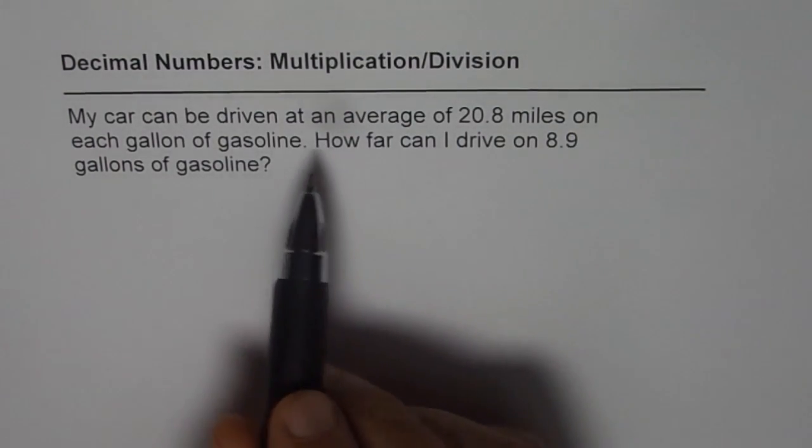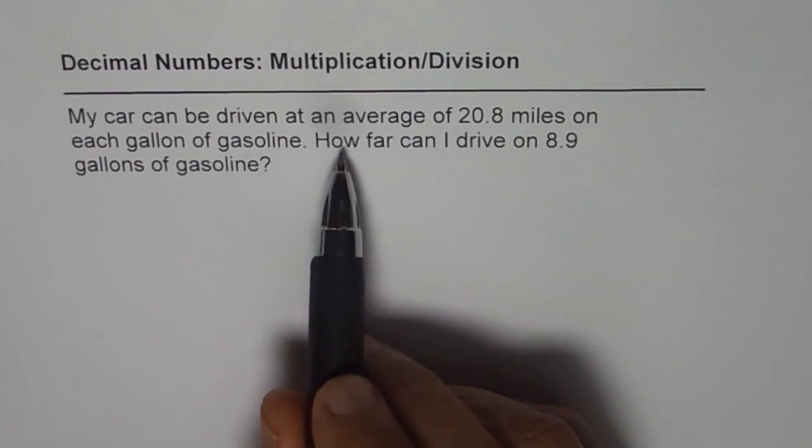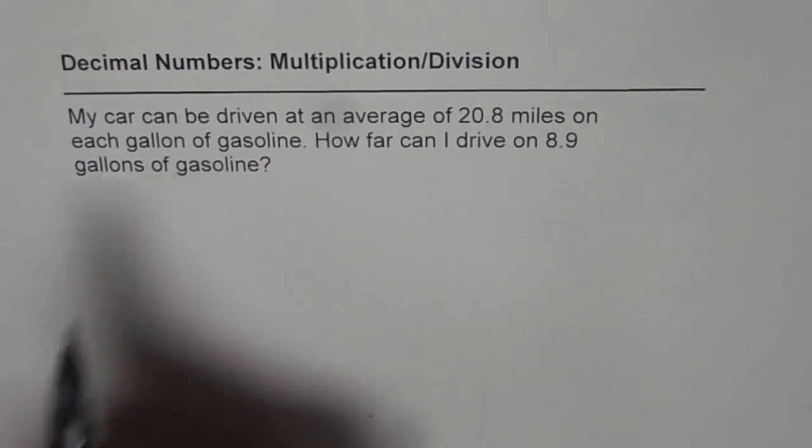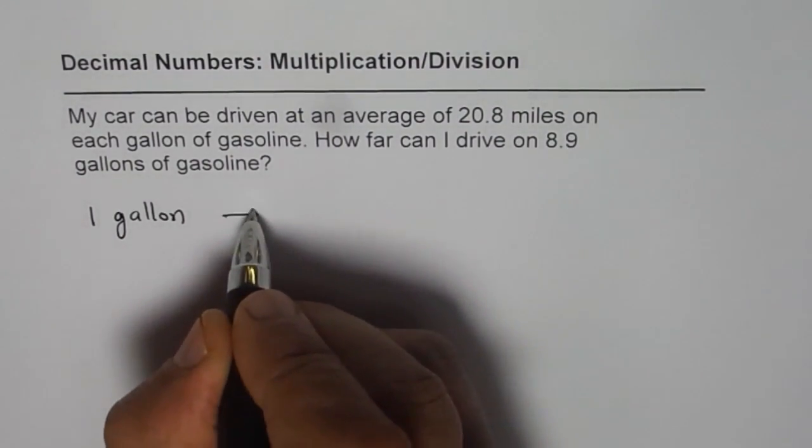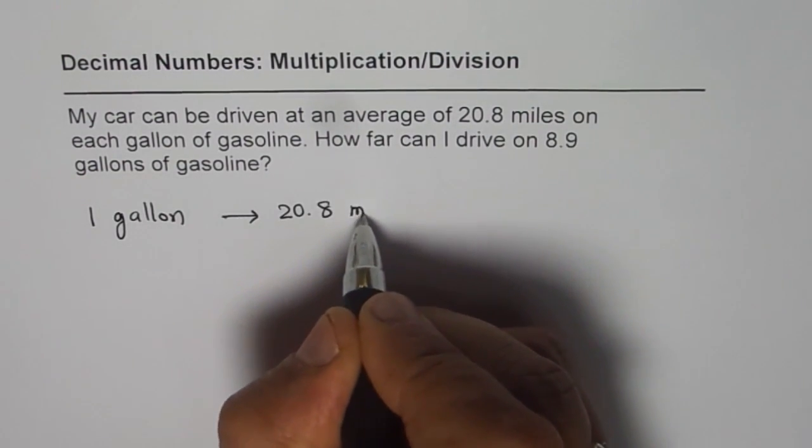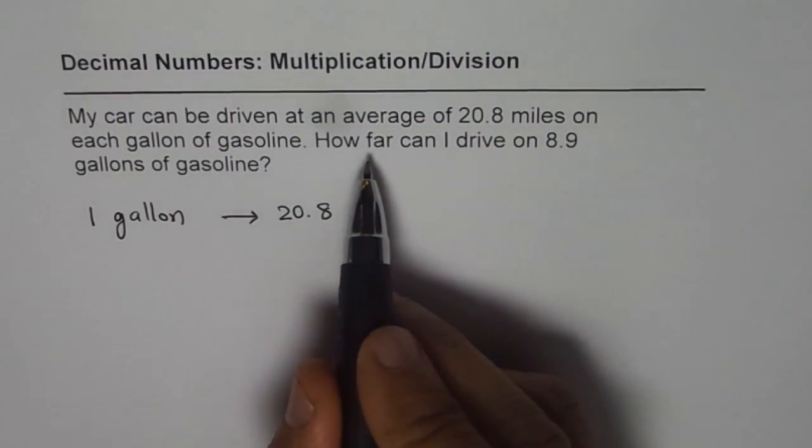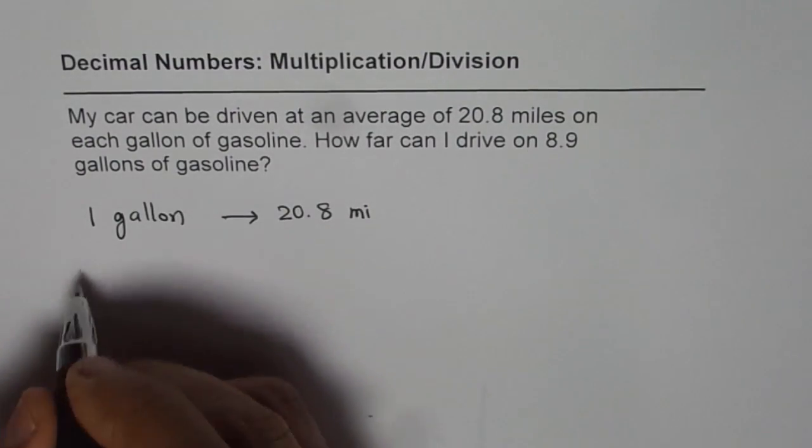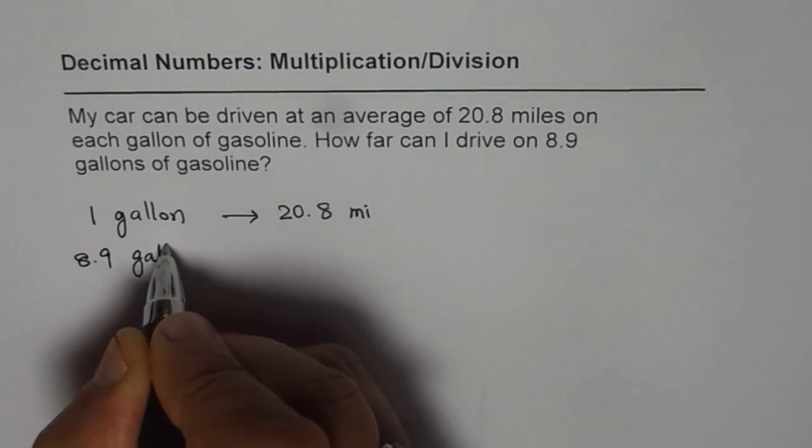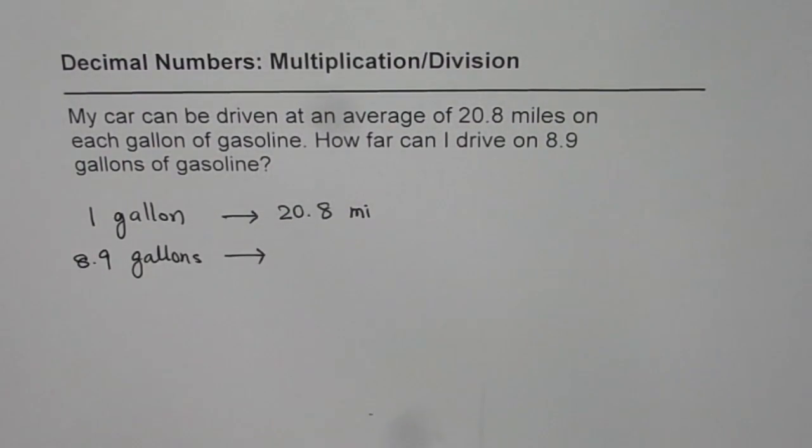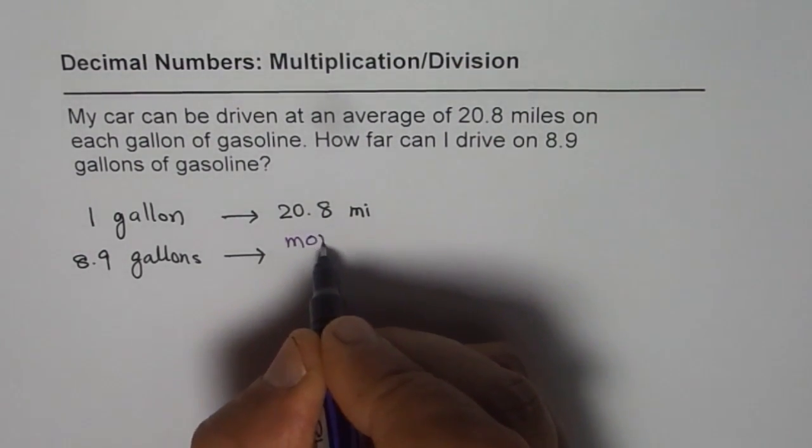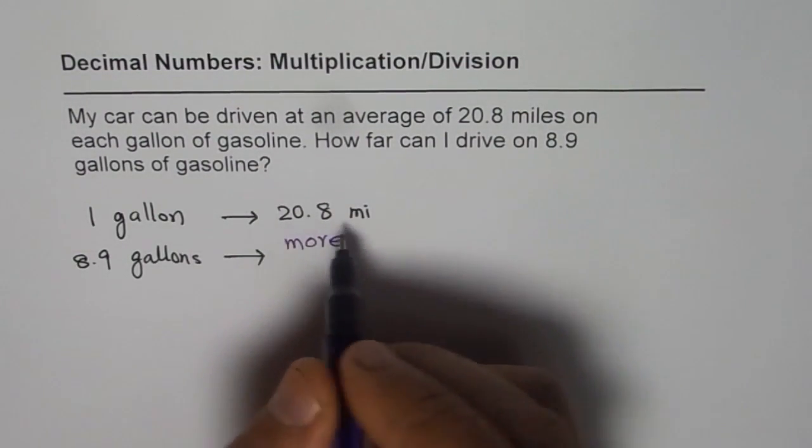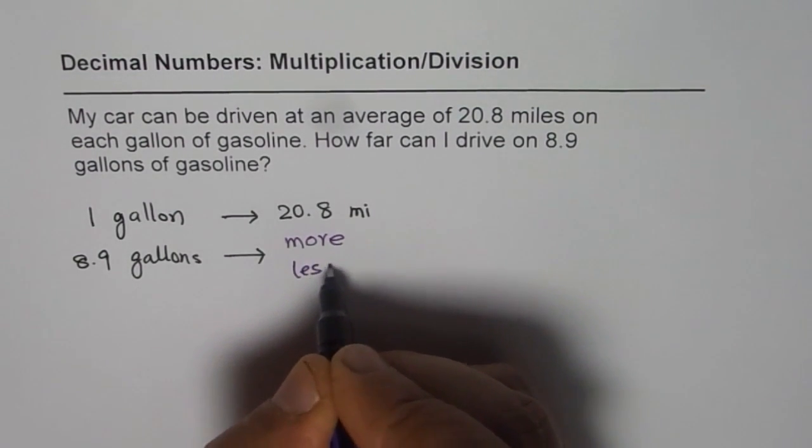The question really is that there is a car which can be driven 20.8 miles in each gallon. That means one gallon will give me 20.8 miles. Now the question is, how far can I drive on 8.9 gallons? So 8.9 gallons, should it be more or less? You have to say whether in 8.9 gallons it should travel more miles or less. That is always the question to be answered.